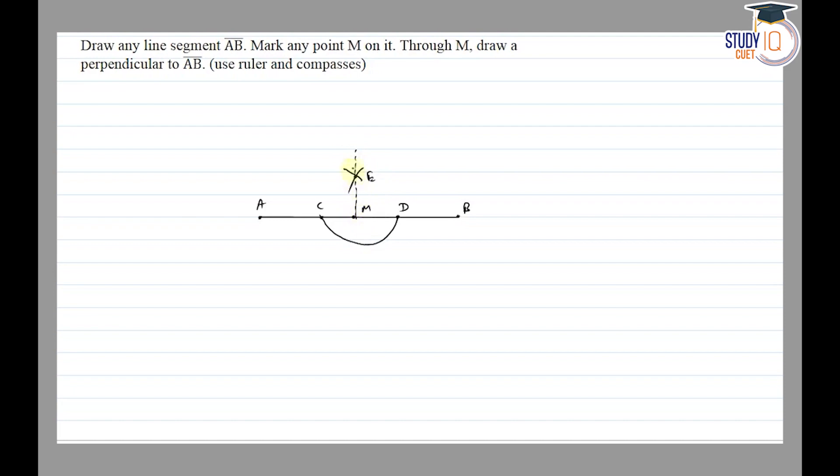So we have here EM perpendicular to AB. EM is the perpendicular on AB. Thank you.